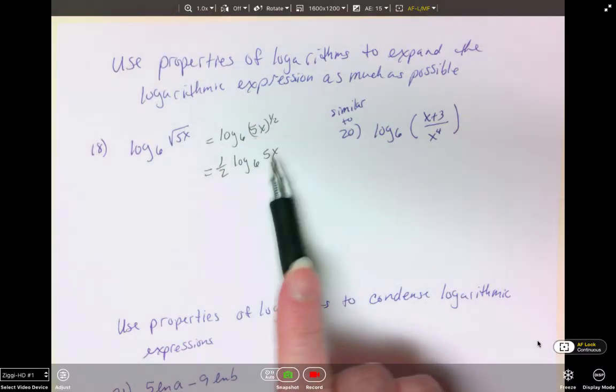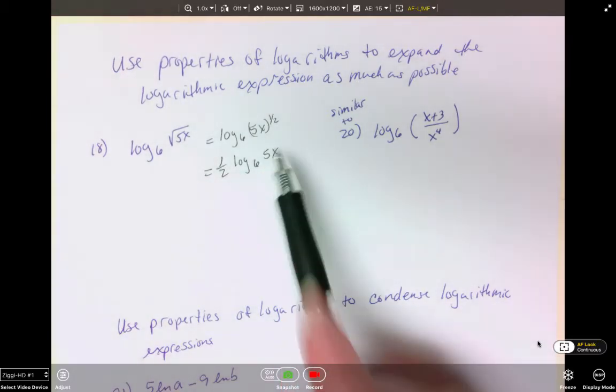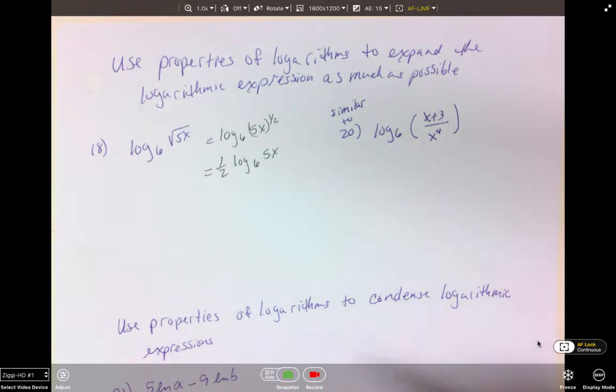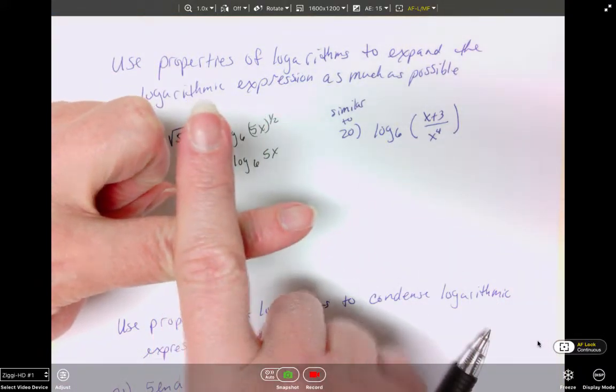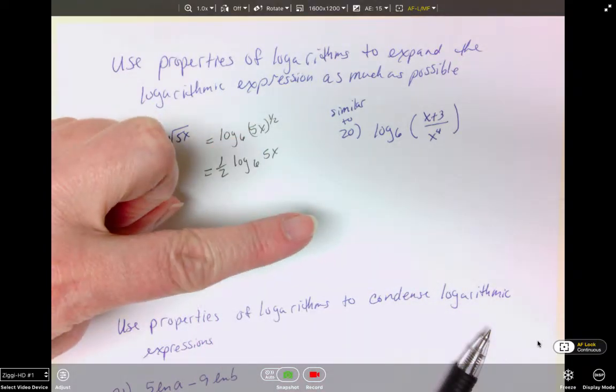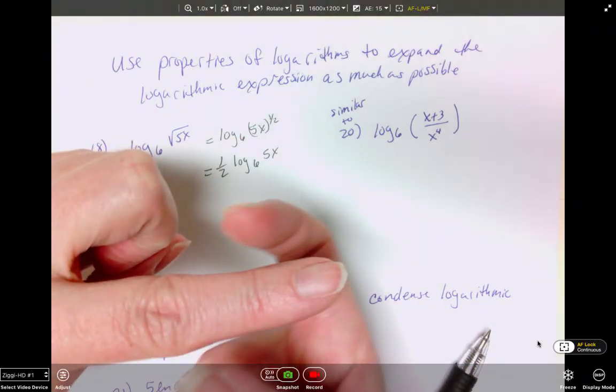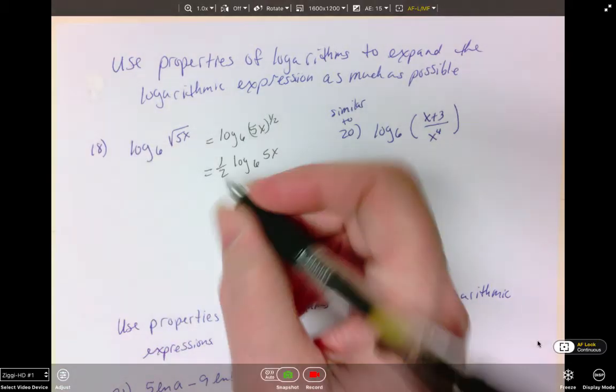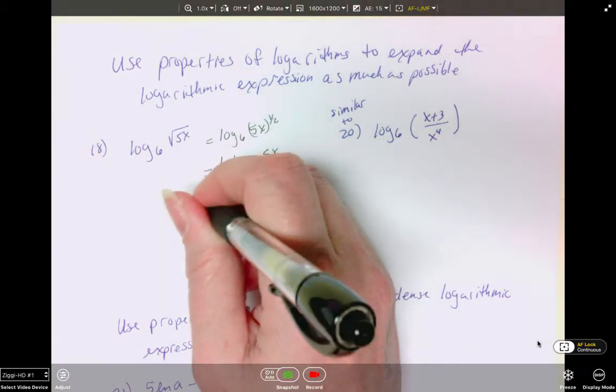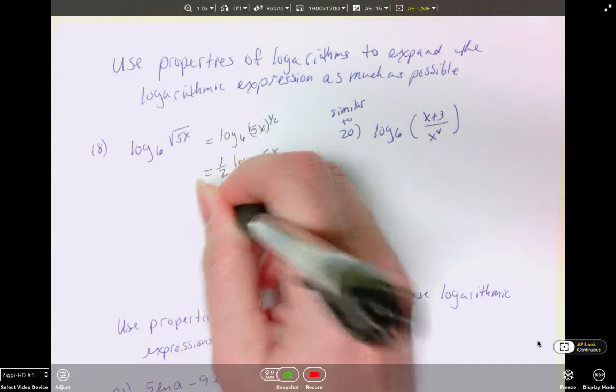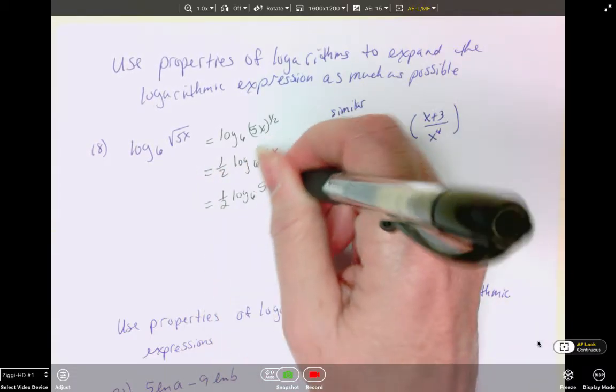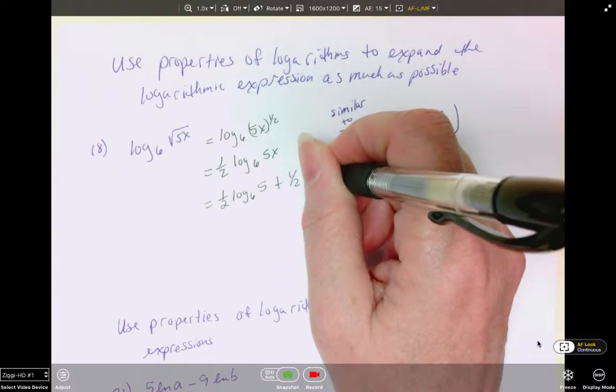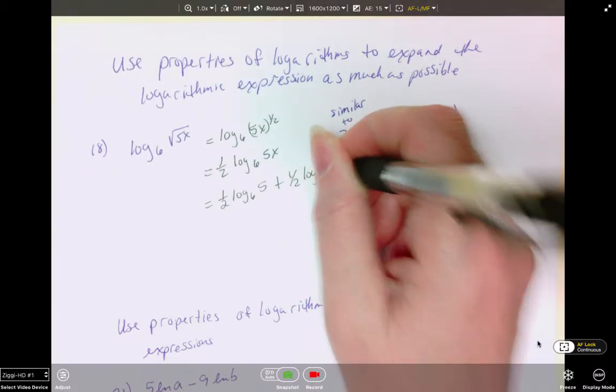What's happening between the 5 and the x is multiplication and multiplication becomes addition. If you have multiplication, it becomes addition. If you have division, it will become subtraction. So to expand this, I will have 1/2 log base 6 of 5 plus 1/2 log base 6 of x.